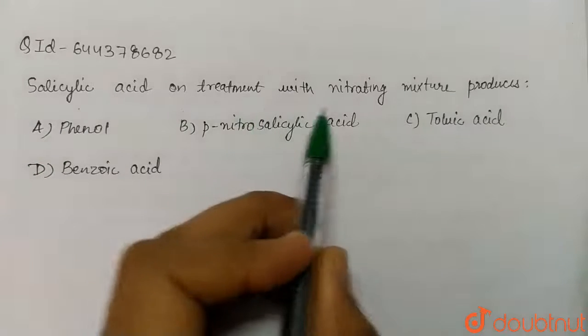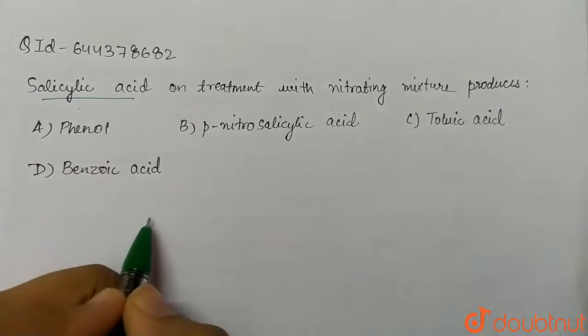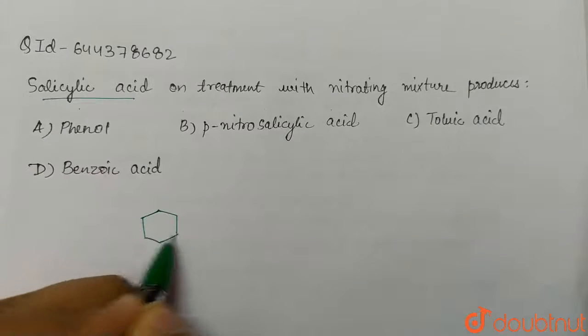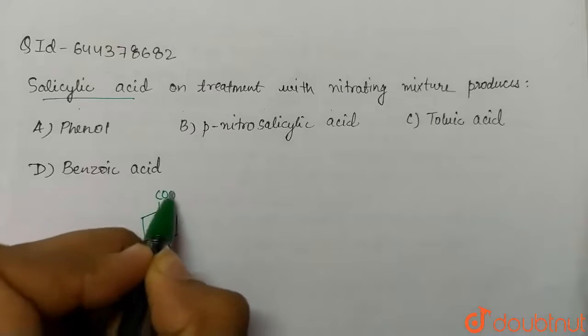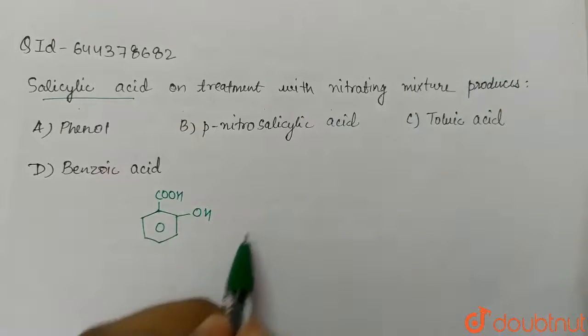We have salicylic acid. The structure of salicylic acid is like this: here we have COOH and here we have OH. Now we have to treat it with nitrating mixture.